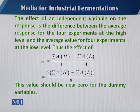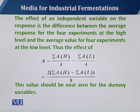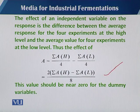To calculate the effect, we use this formula: summation of A with high response divided by 4, minus summation of A with low response divided by 4. By rearranging this equation, we get the effect formula.